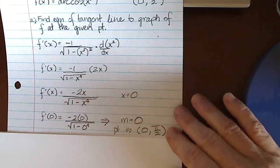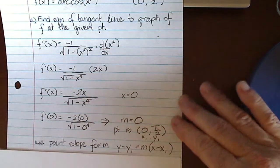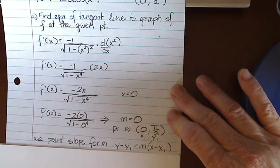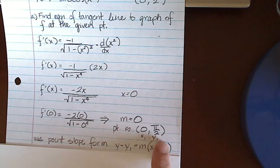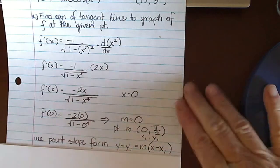So now I have a slope and a point. That means I'm going to use the point slope form to find the equation of my tangent line. And substituting in 0 for x1 and pi over 2 for y1, I substitute in M also, and I end up with y equals pi over 2.